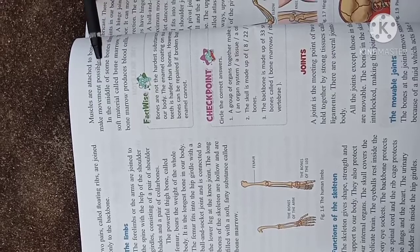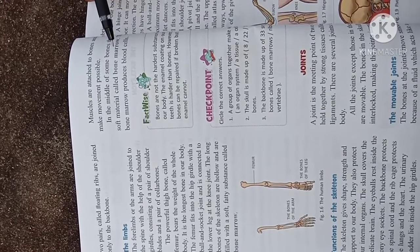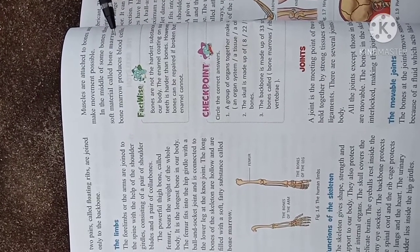In the middle of some bones there is soft material called bone marrow. The bone marrow produces the blood cells.